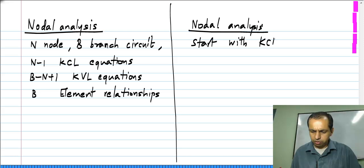So you start with KCL equations at n minus 1 nodes.